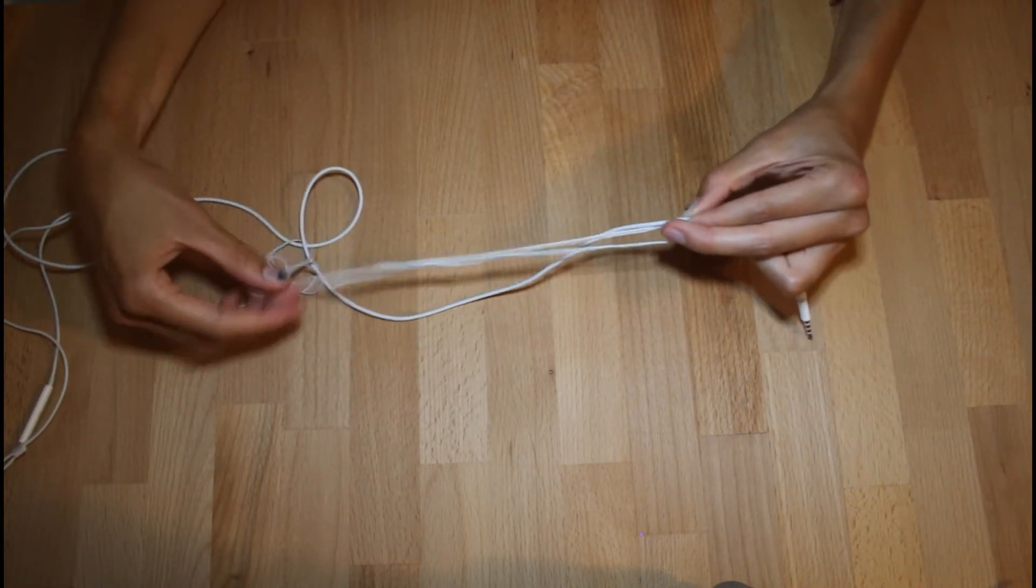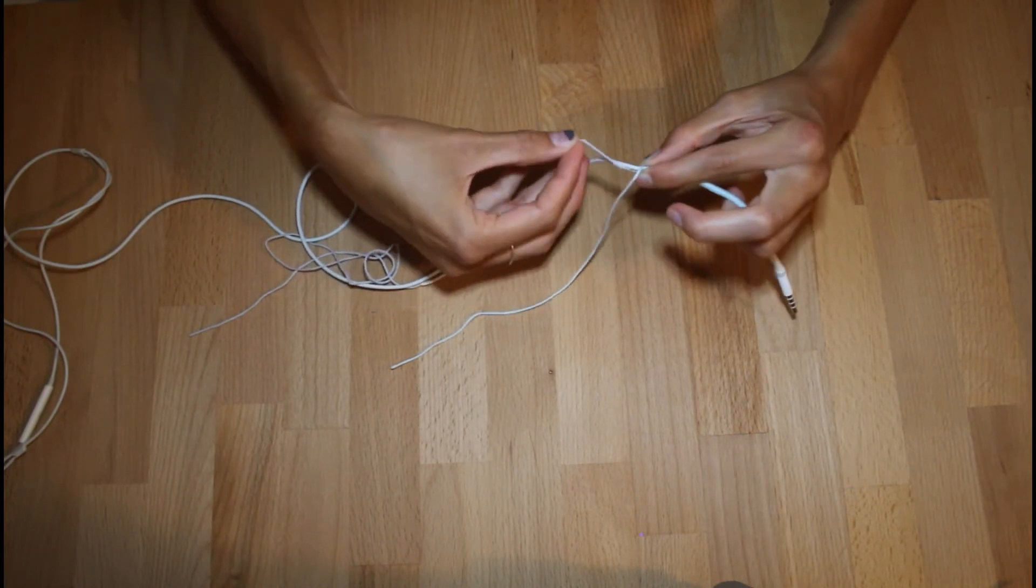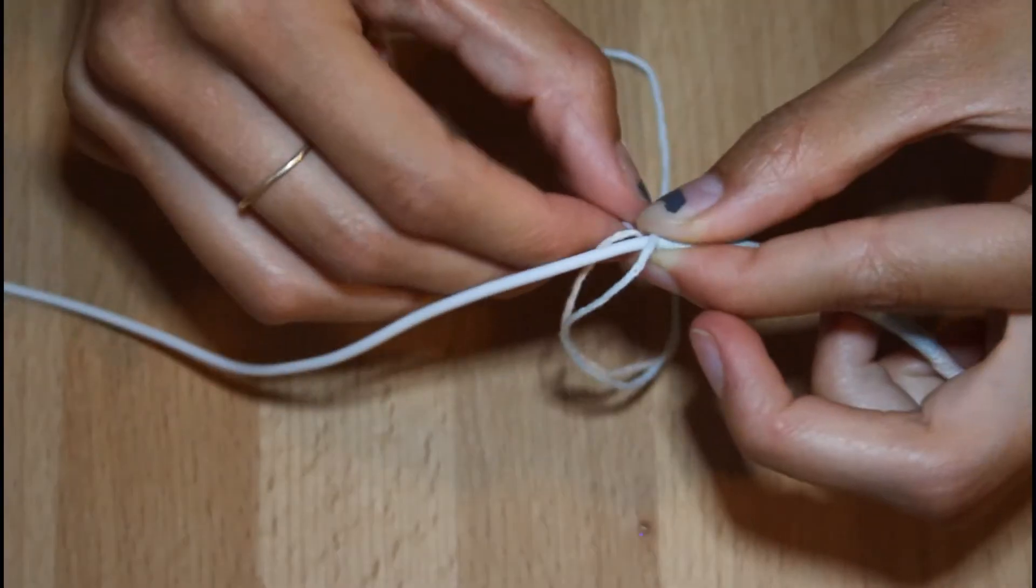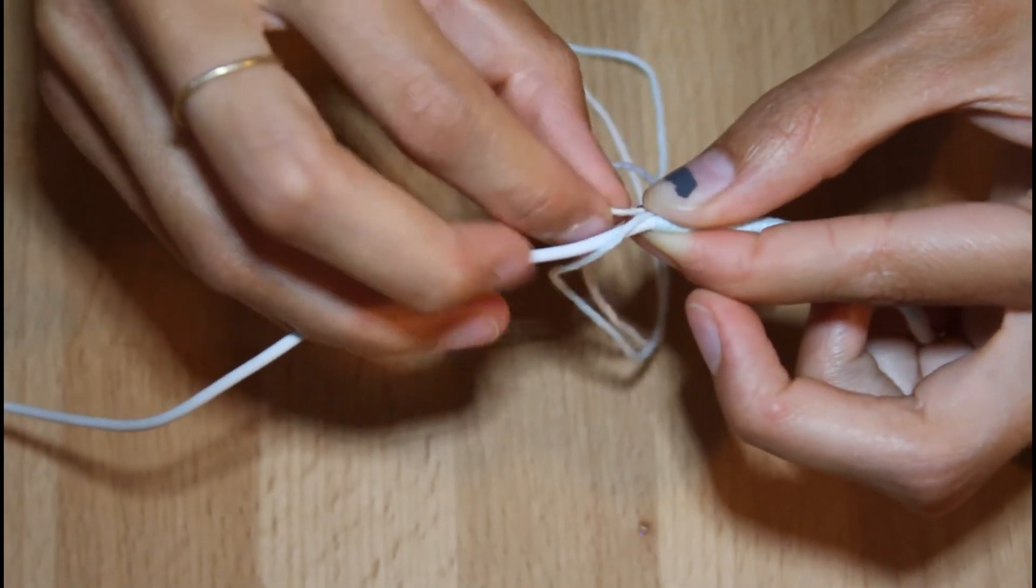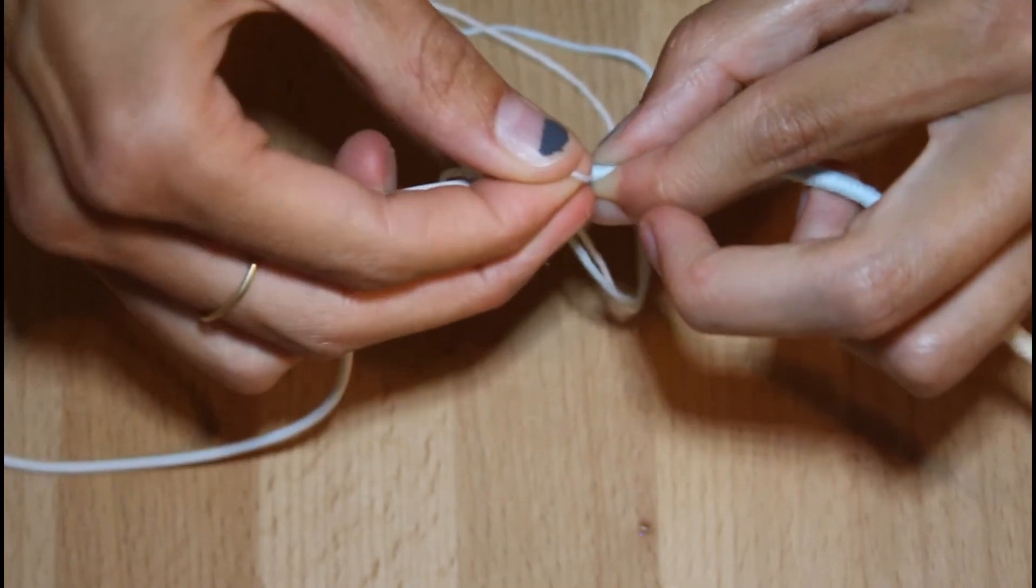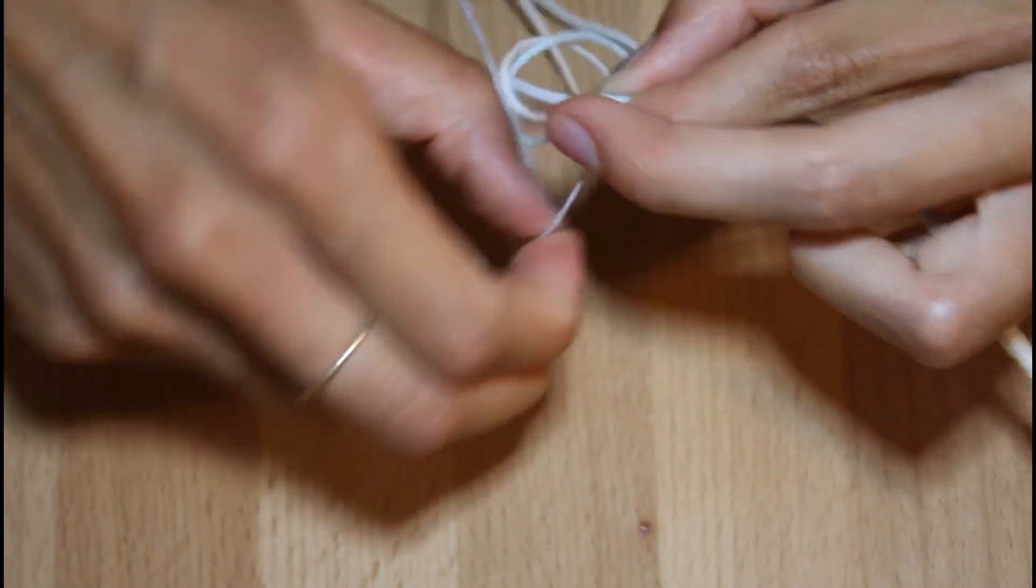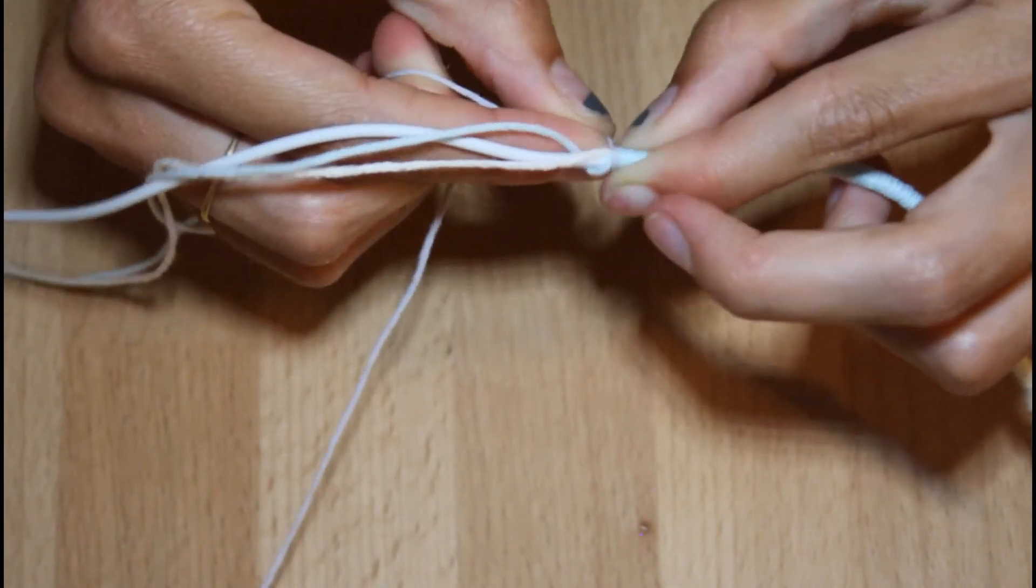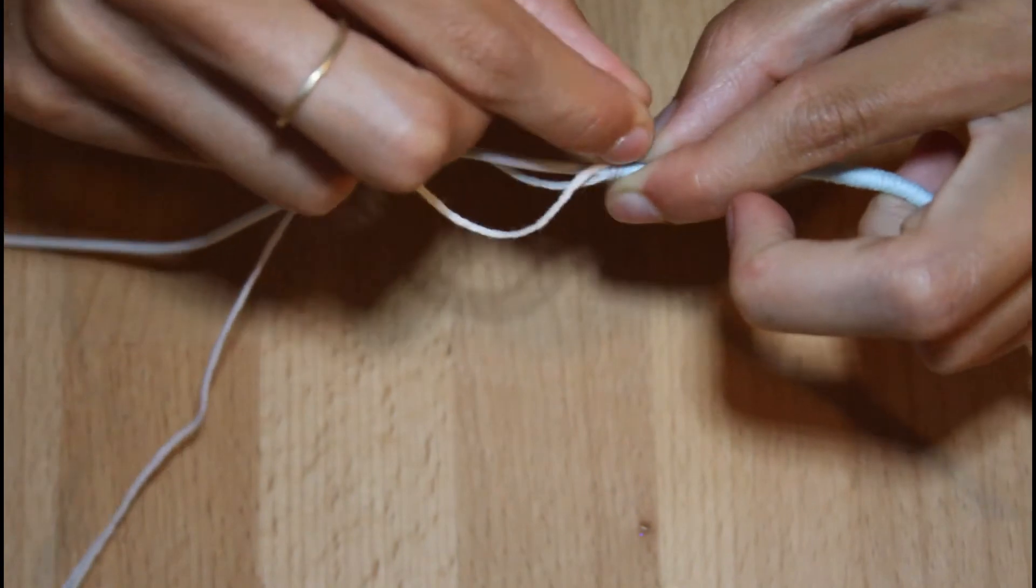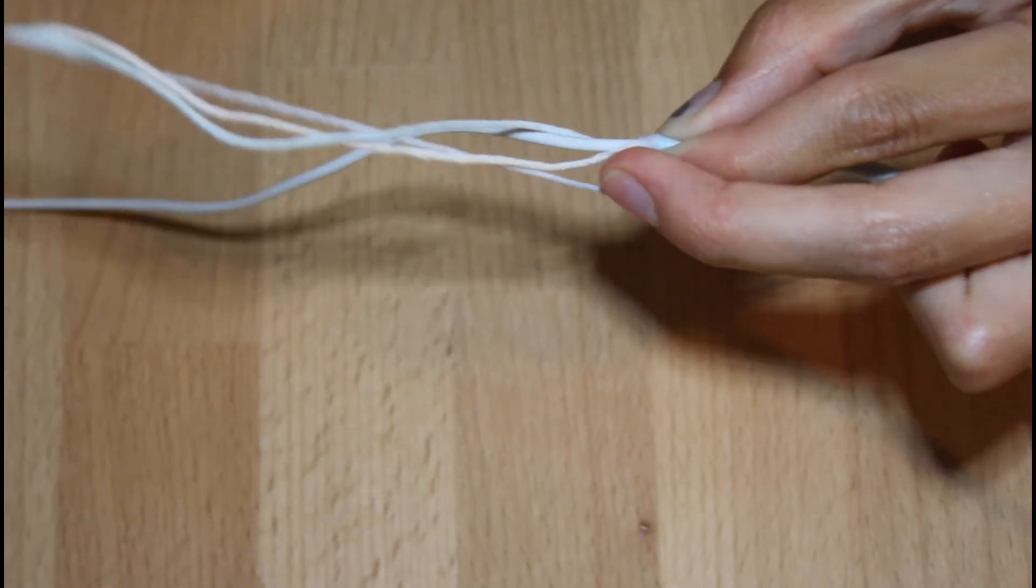Now it's time for the last color. I have the last color here. Again, you're going to carefully try to wrap it around the color that you just completed without letting that color unravel. Once you've got a few in, you're good to go, and then you just begin the process all over again.